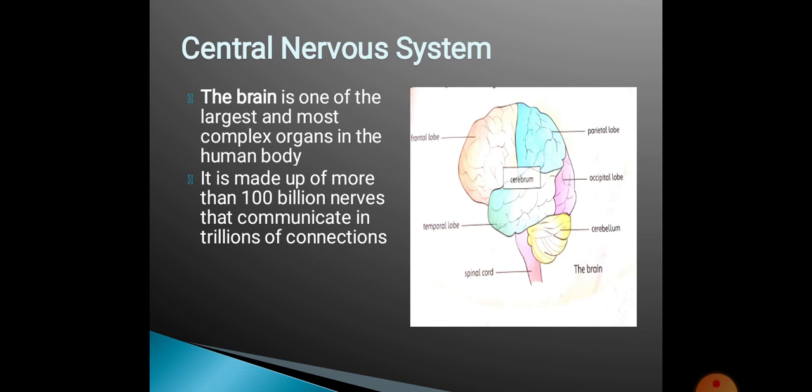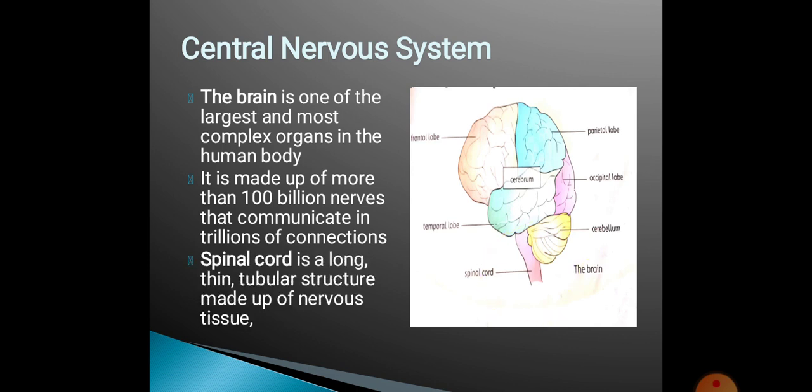The tube-like structure we call the spinal cord carries our body's feelings and emotions in response to stimuli, and the brain responds to those. The spinal cord is a long, thin tubular structure made of nervous tissue. It is linked to the central nervous system, meaning the brain.